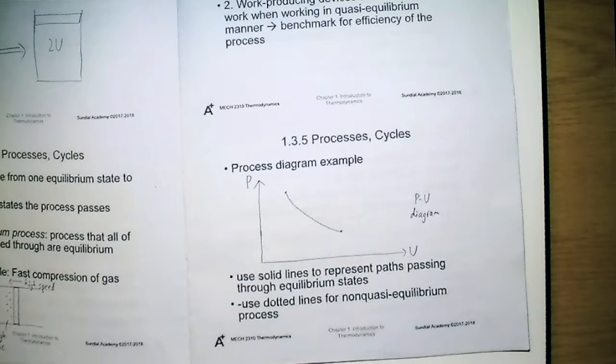So the process path cannot describe the whole system. In this case, we will use dashed line instead of solid line to denote such a process, but you will see this in the later chapters.